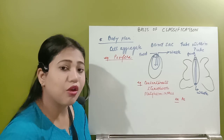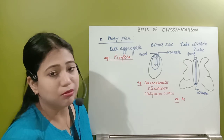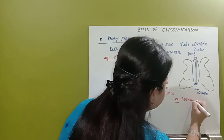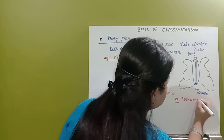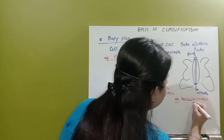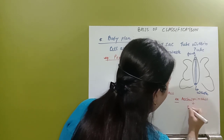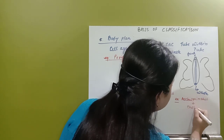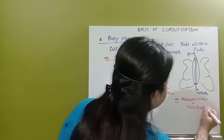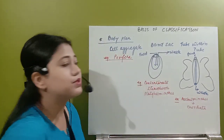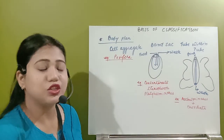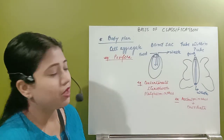In case of aschelminthes - also known as nemathelminthes or nematoda - these organisms from aschelminthes up to the last, that is chordata, the last phylum, all of these organisms are going to have the tube within tube body plan.